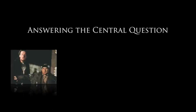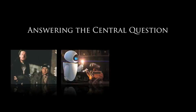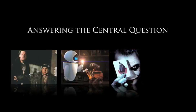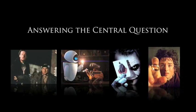Act Three is all about answering the central question. In Home Alone, will Kevin defeat the dim-witted robbers and save the house? Will WALL-E find Eve and live happily ever after? In The Dark Knight, will Batman defeat the Joker and save Gotham City? And in The Lord of the Rings: The Return of the King, will Frodo destroy the ring and save Middle-earth? Act Three is where these questions are answered once and for all. So how do we incorporate these into the Contour software? Stay tuned.